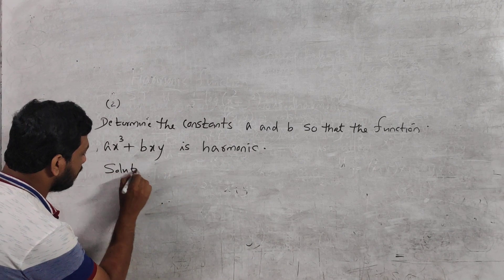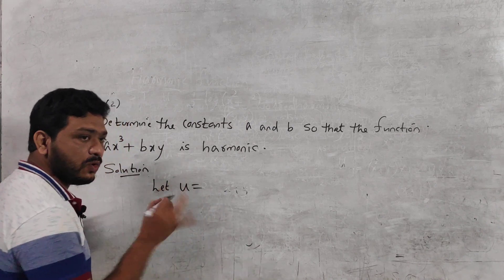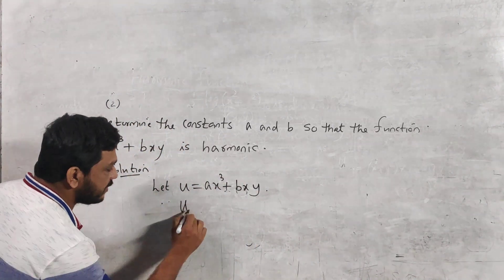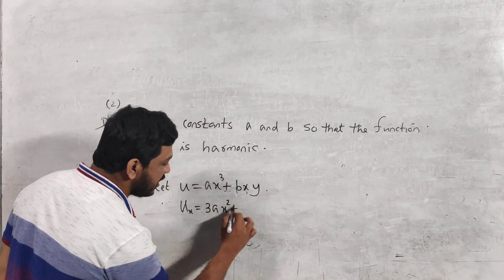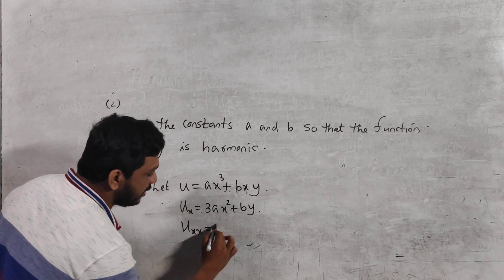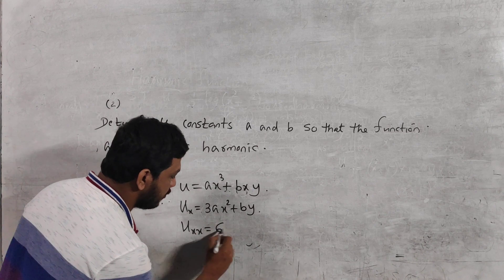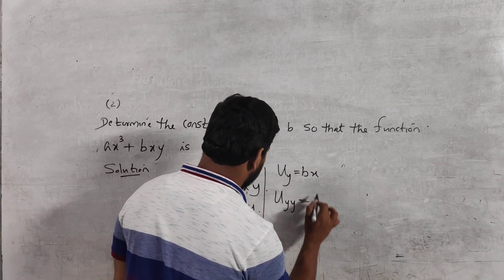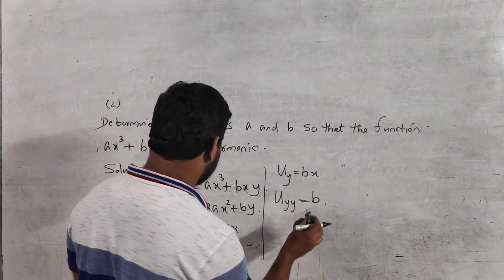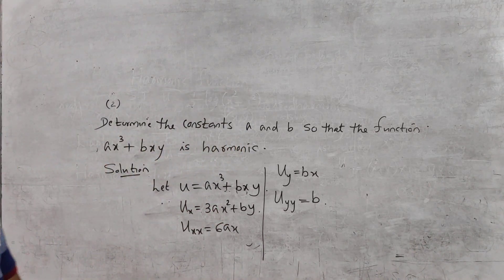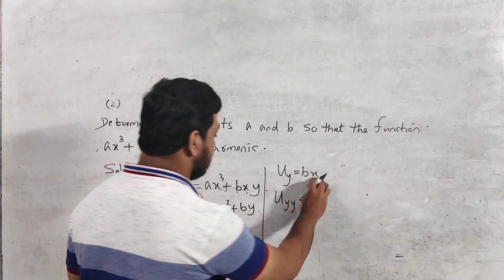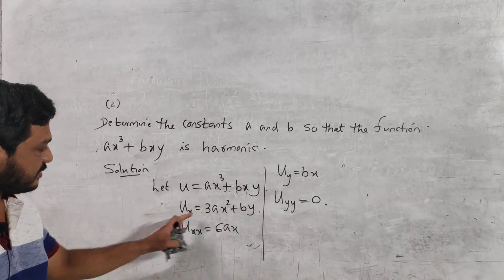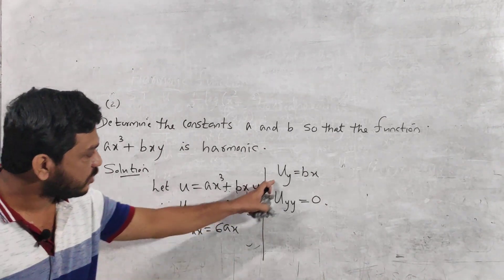Solution: let u = ax³ + bxy. Computing the partial derivatives: ux = 3ax² + by, uxx = 6ax. Then uy = bx, and uyy = 0.